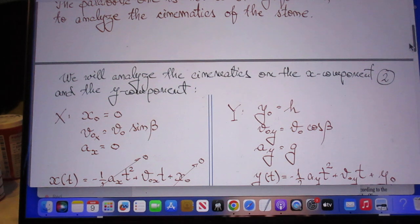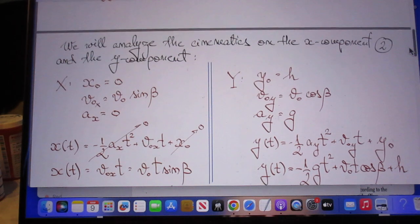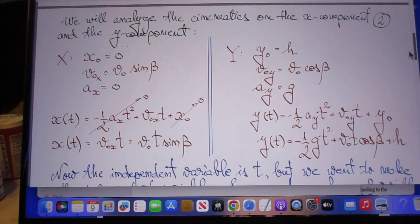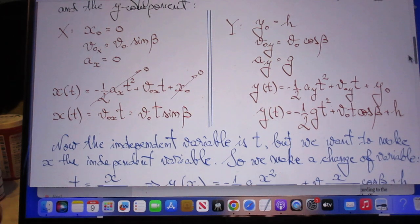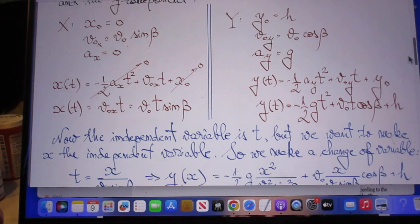The y direction: y_0 is h, v_0y is v_0 cosine beta, and there is an acceleration in the y direction which is gravity, a_y is g.